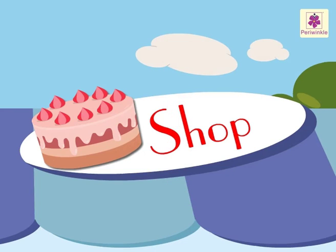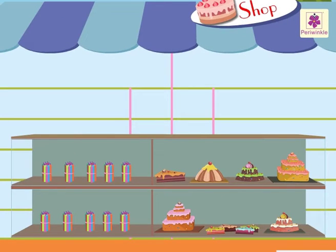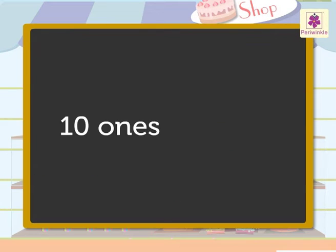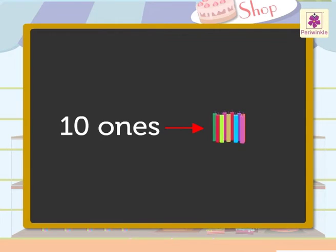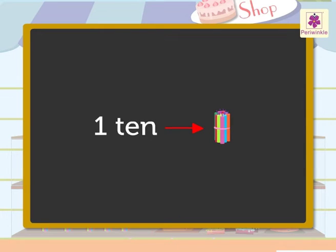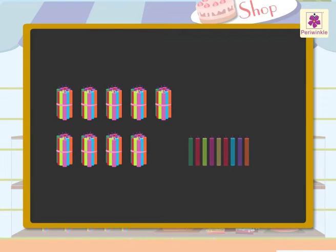Today let us learn what hundreds are with the colorful candles at the cake shop. We know that ten ones mean ten candles, so when we group ten candles together we get one ten. Nine tens and nine ones mean 99 candles.